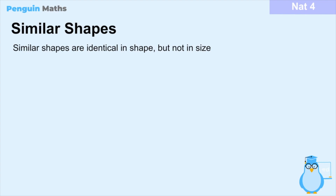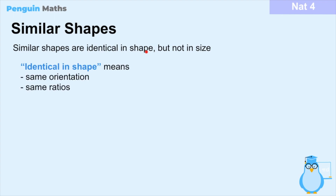To begin this lesson we will be talking about similar shapes and define what they are. If you could imagine two objects side by side where one is a miniature or bigger version of the other, they can be described as similar shapes. The definition is: similar shapes are identical in shape but not in size.